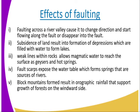Number three: these weak lines within rocks allow magmatic water to reach the surface as geysers and hot springs. This is especially the volcanic water that is underground — it will only ooze out through a fault line or a line of weakness. These hot springs are very important to human life. Number four: fault scarps expose the water table which forms springs that are the source of rivers.